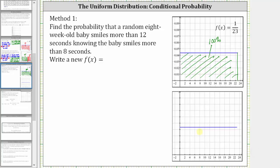So we're only considering the interval from x equals 8 to x equals 23 to represent 100%. We know the area under this curve must be equal to 1, but notice how the base is not 23 units, and therefore this is going to change the probability density function f of x.